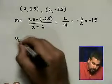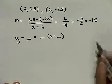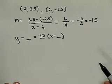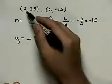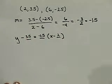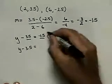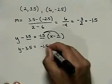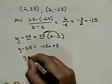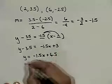Now using the point-slope form of a line, y minus y1 equals the slope times x minus x1. The slope is negative 1.5, and we choose the point (2, 3.5), so x1 is 2 and y1 is 3.5, giving us y minus 3.5 equals negative 1.5 times x minus 2. To put this in slope-intercept form, we distribute negative 1.5: negative 1.5x, and negative 1.5 times negative 2 is positive 3. Adding 3.5 to both sides gives y equals negative 1.5x plus 6.5. That's our final answer.